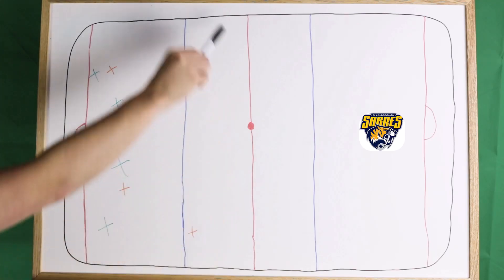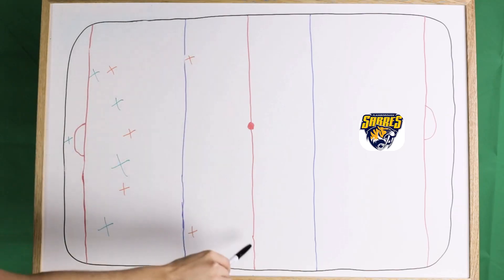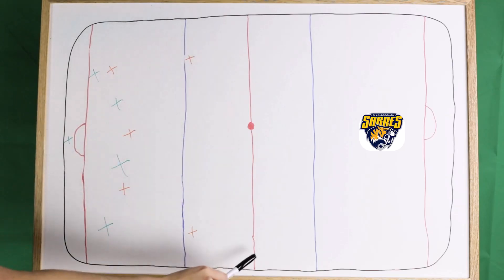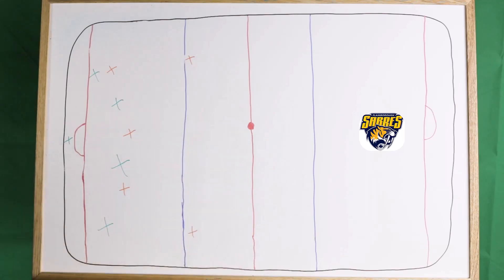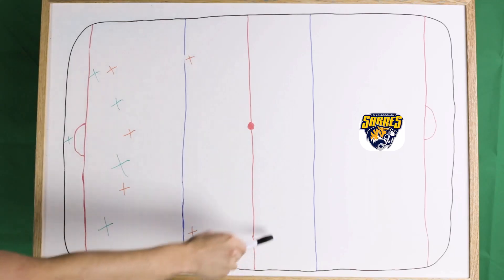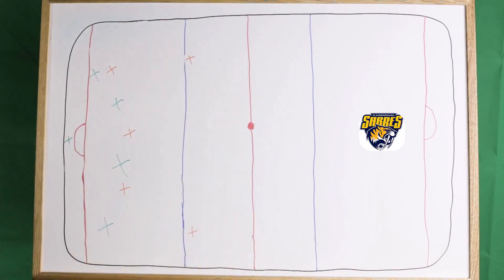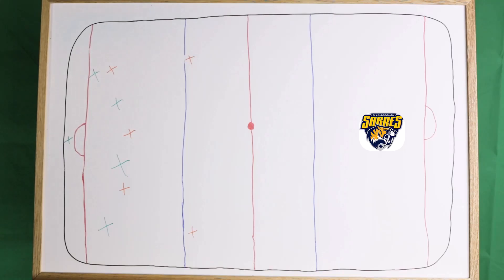This orange team wants to trap the puck — they don't want to let it get by the red line. If the puck does get by the red line, they want it to be dumped in so they can gather it and come back the other way. This system is implemented by teams who generally can't match up offensively with another team, so they try to shut them down. That's why it was called the 'dead puck era.'